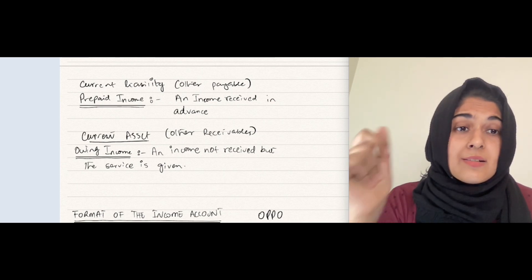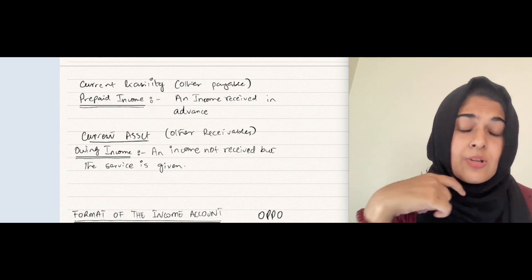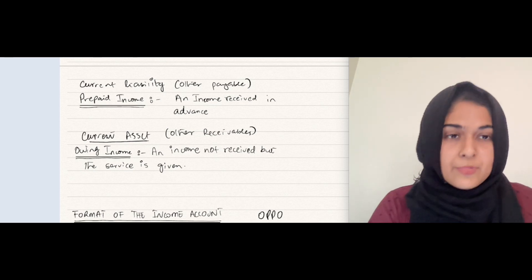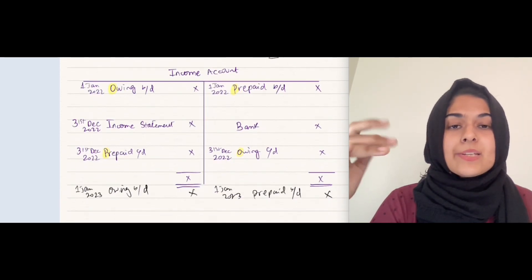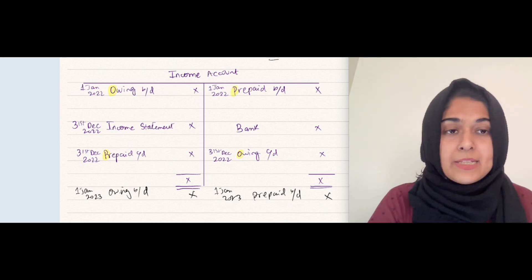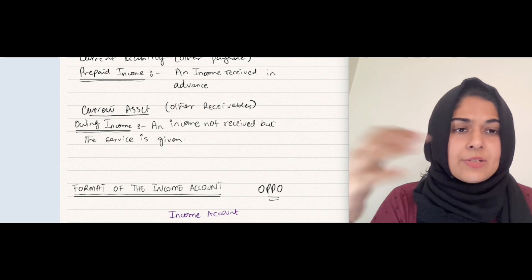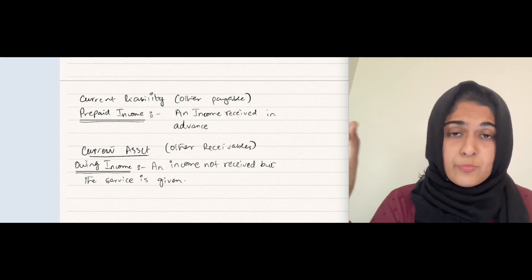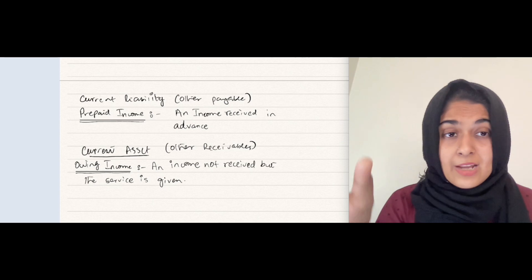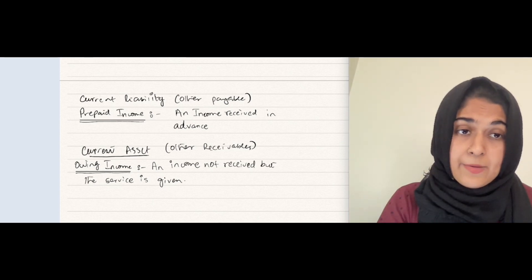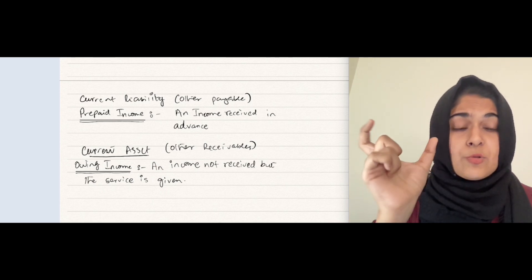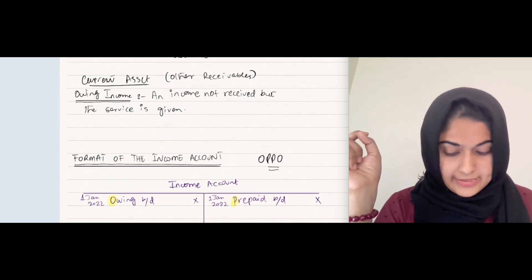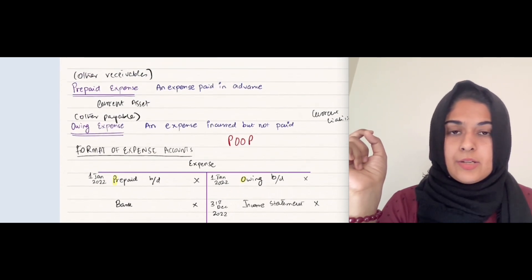The accounting year is super important. The calendar year runs January to December, but the accounting year can start in any month - for example, starting 1st February would end on 31st January. This is very important: in a question, you must identify which accounting year applies and consider that specific period. Thank you so much.